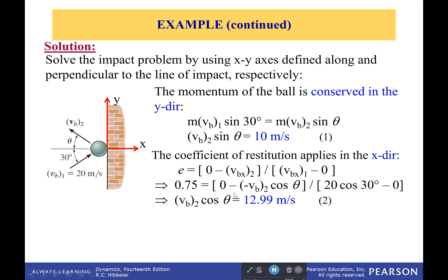If we plug everything in, we get velocity b₂ cosine of theta, and 20 cosine of 30 degrees for the initial velocity, and zero both times for the wall. If you wonder why it's negative, it's because the direction switched — it's going backwards. You might wonder why we have theta here instead of 30 degrees. It won't be 30 degrees again, because the x velocity is going to change.